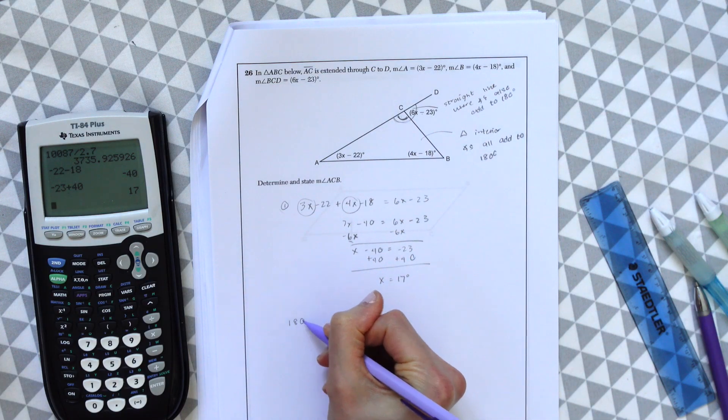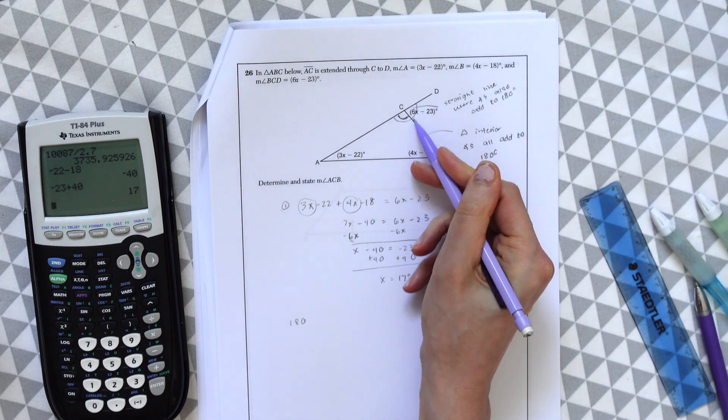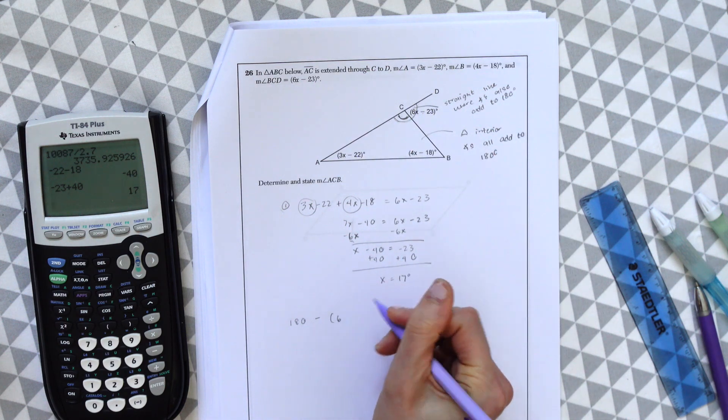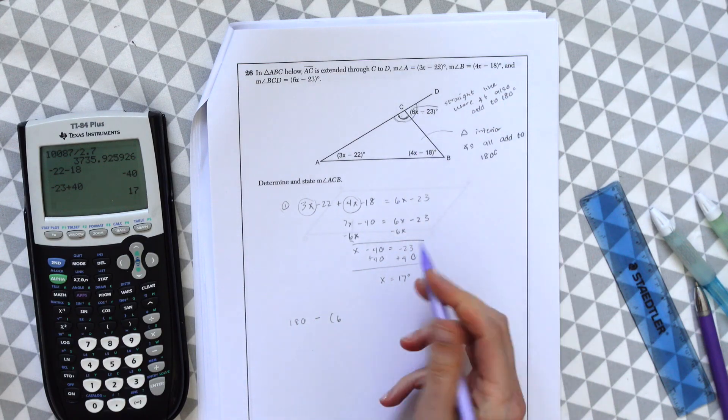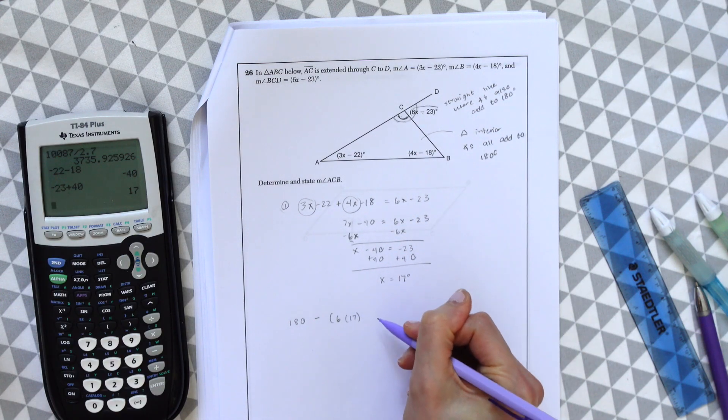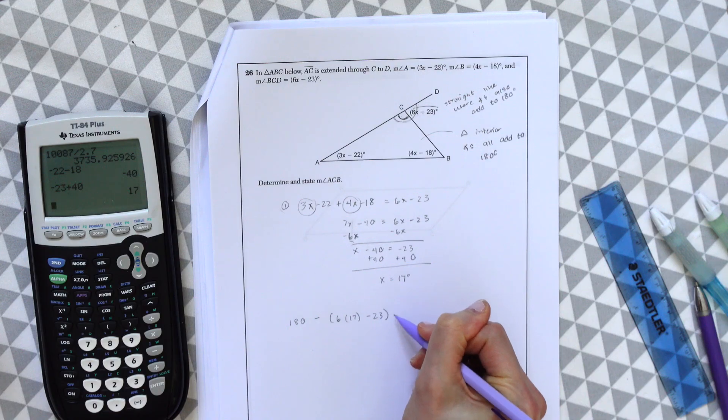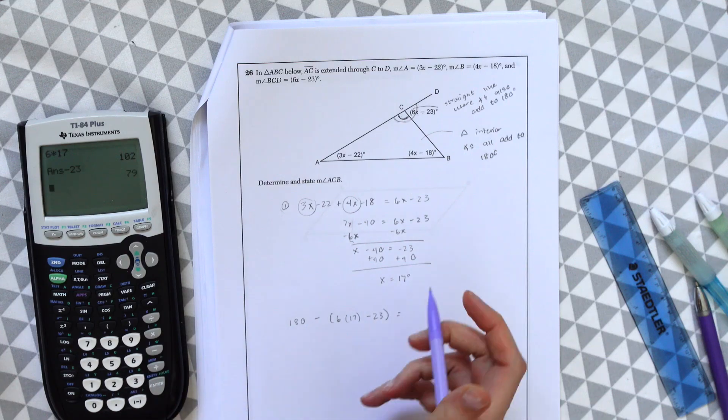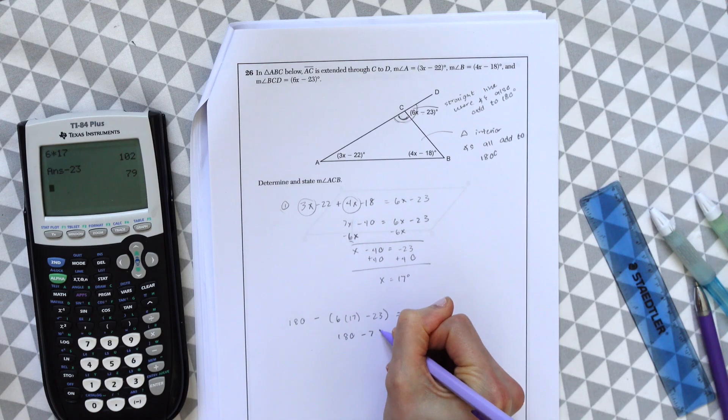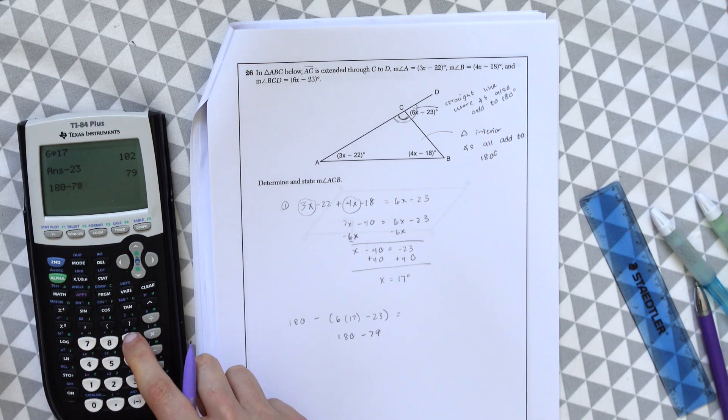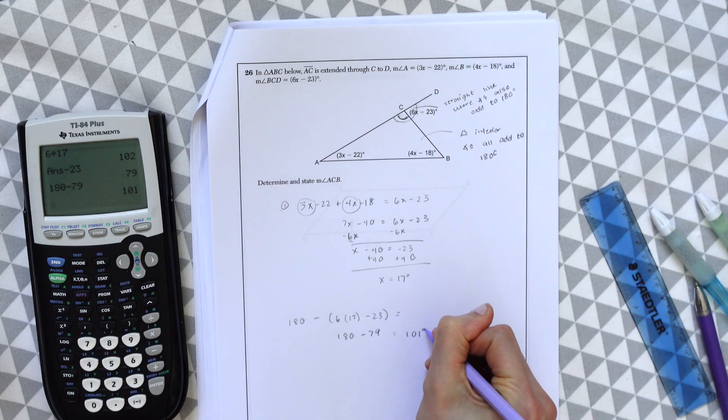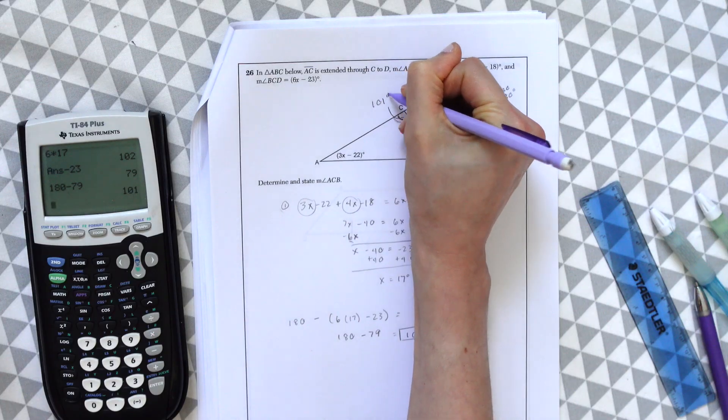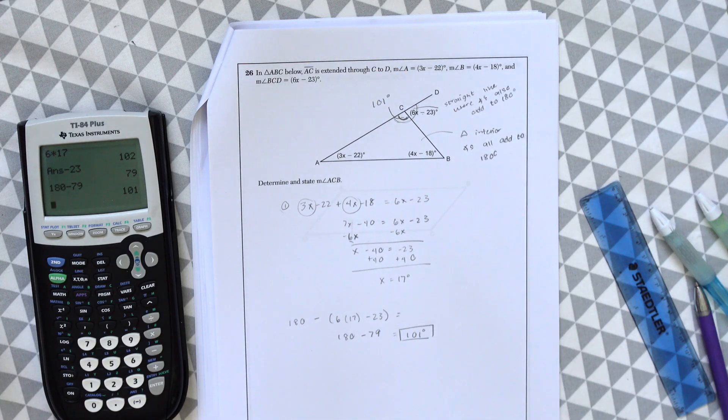So we know this is going to be 180 degrees. We're just looking at this line here, 180 degrees minus 6. And then now we know the value of x is 17. So 6 times 17 minus 23. And then we could just calculate this. This is 180 minus 79, and we get 101 degrees. So this angle C right here is 101 degrees. And that's our answer.